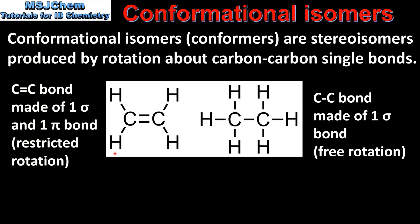Here we can see the full structural formula of two molecules. On the left we have ethene with its carbon-to-carbon double bond, and on the right we have ethane with its carbon-to-carbon single bond. The carbon-to-carbon double bond is made up of one sigma bond and one pi bond, and because of the pi bond we have restricted rotation around it. A carbon-to-carbon single bond is made up of one sigma bond, so there is free rotation between the two carbon atoms. This free rotation results in the formation of two isomers which are called conformers.